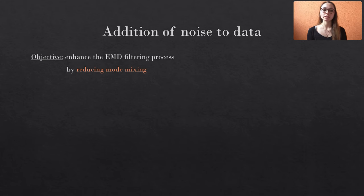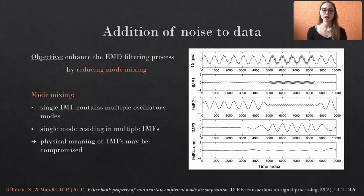Mode mixing basically means that the decomposition into several modes is not accurately performed. You can observe such a behavior in the figure here on the right. For example, the first and second IMF contain more than a single dominant oscillation frequency, but these should be separated into individual modes since they clearly represent different features.